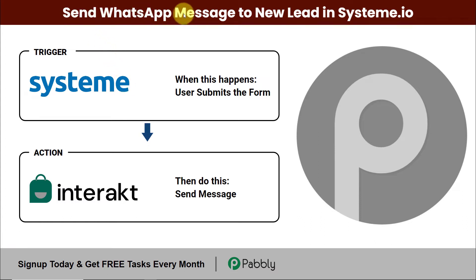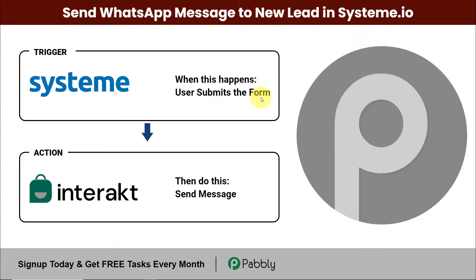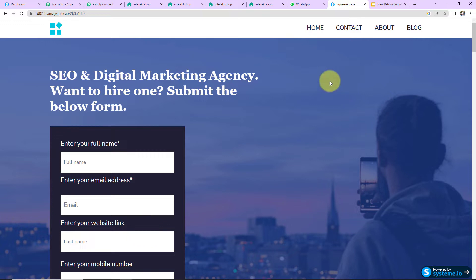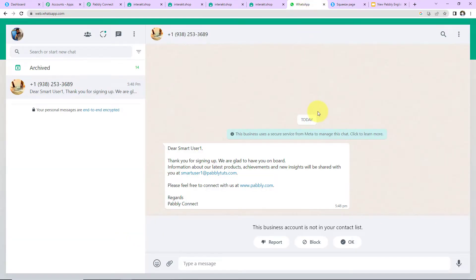In this video, we are going to see how to send a WhatsApp message to new leads that have been generated through form submission in Systeme.io. Systeme.io is an all-in-one marketing platform. I have created a lead capture form and my objective is that on submission of that form, I should get a new lead and a WhatsApp message must be sent to this new lead.